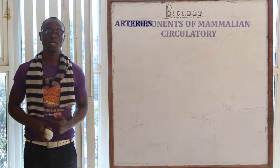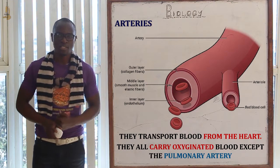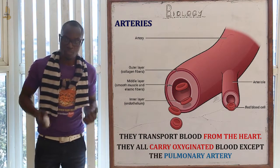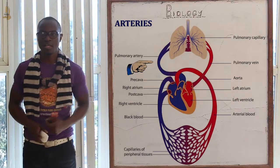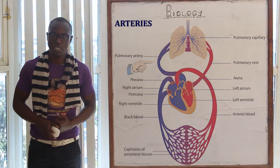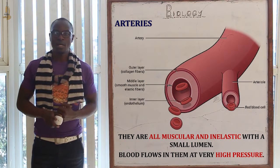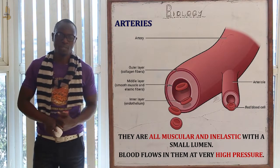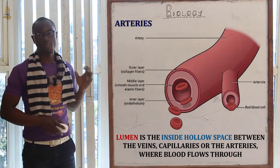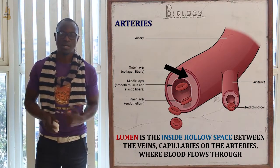Let's begin by looking at the arteries. Arteries transport blood from the heart and carry oxygenated blood to all parts of the body, except the pulmonary artery, which is the only artery that carries deoxygenated blood. Arteries are very muscular and inelastic with a very small lumen, so blood flows in them at very high pressure, as the diagram shows.